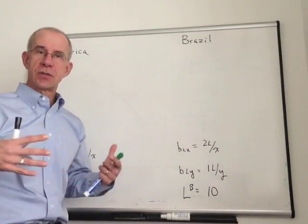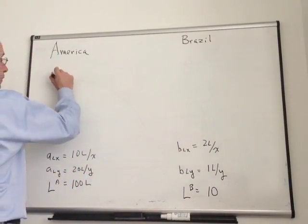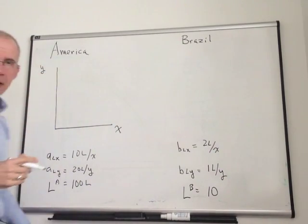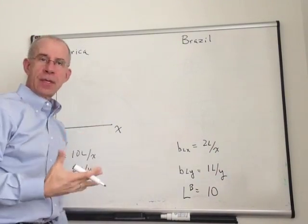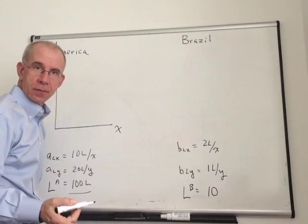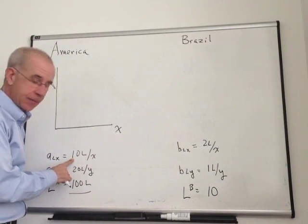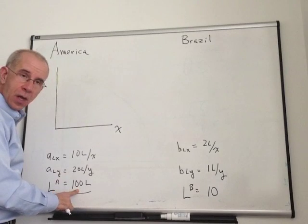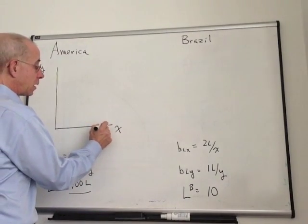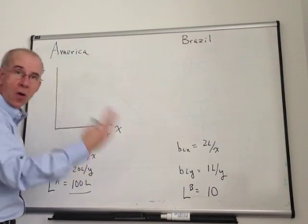The first thing we want to do is to graph the production possibility frontiers for the two countries. We'll put X on this axis, Y on this axis, and we want to ask, how many units of X can be produced if all 100 units are devoted to that good? It takes 10 workers for every X. If we use all 100 workers to produce X, then you're going to be able to produce 10 units of X with all of your resources.